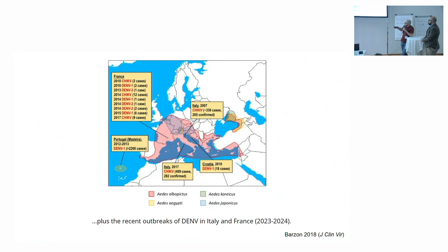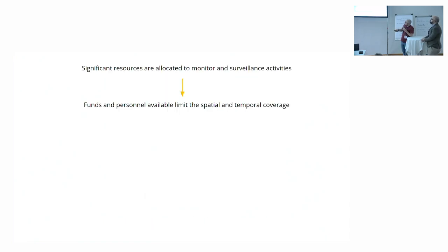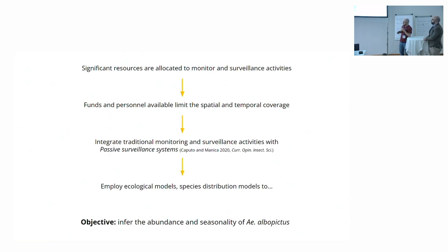To control this population there are significant resources that are located at the local scale to monitor the population dynamics and then control it, using treatments like larvicides, adulticides in case of outbreaks and so on. The problem is that the funds and personnel available is limited, as always. An old idea is to use models to integrate monitoring surveillance activities, what is called a passive surveillance system. We designed this machine learning model to infer the abundance and seasonality of Aedes albopictus in a portion of southern Europe.